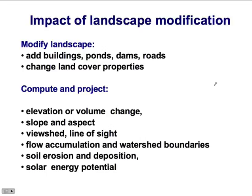We can not only make small changes with clay, but we can also add buildings, push in ponds, add dams, and modify roads. We can also change land cover properties, for example the roughness of the surface. For each of these changes, we can create a new digital elevation model and compute and project back elevation or volume change. We can project slope and aspect, viewshed or line of sight — for example, how adding a new building would change line of sight. We can also simulate water accumulation, look at how a change in topography or development changes watershed boundaries, estimate soil erosion and deposition for new land use configurations, and explore solar energy potential.